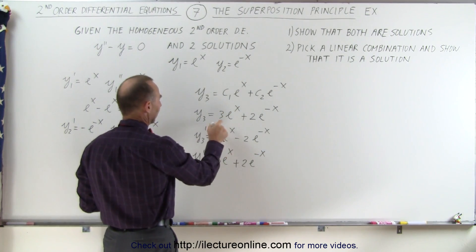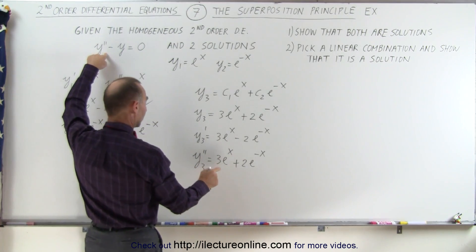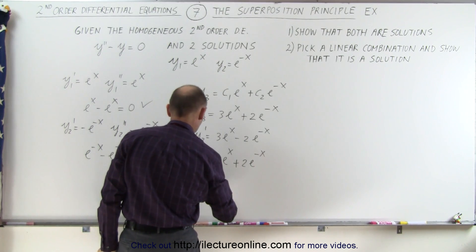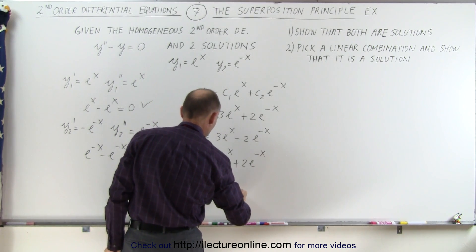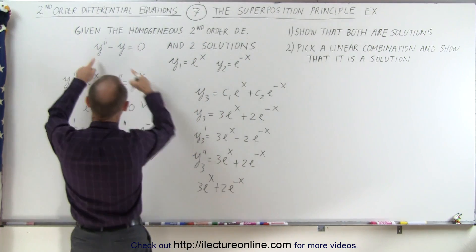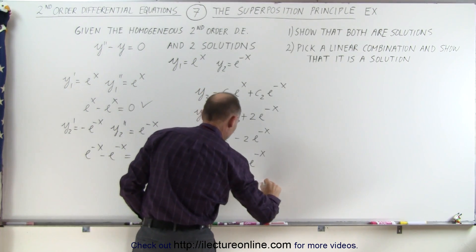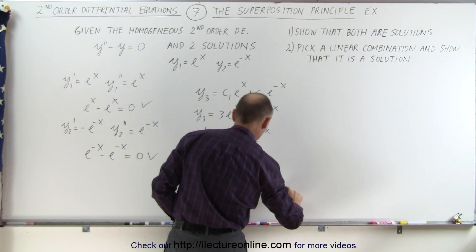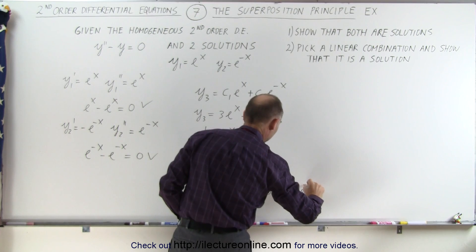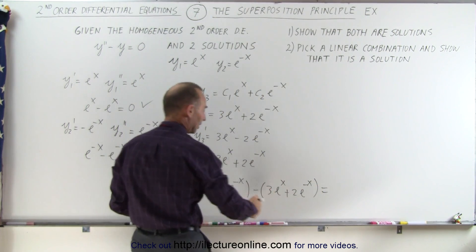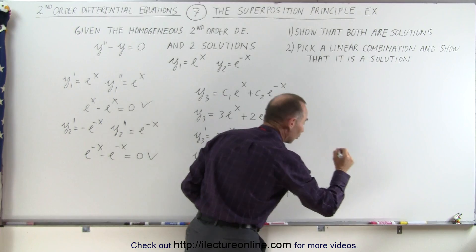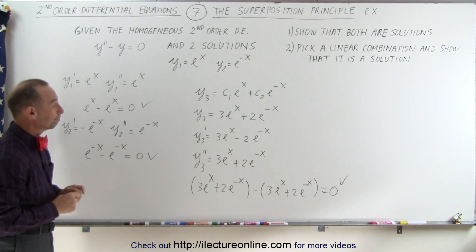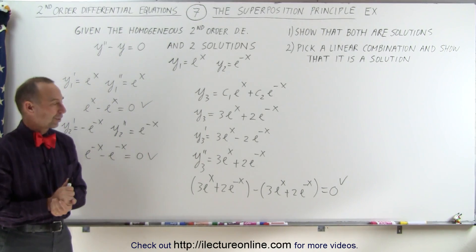Now when we plug in y3 double prime and y3, we get 3e to the x plus 2e to the minus x for the double prime, minus y which is 3e to the x plus 2e to the minus x. When we subtract, we again get zero. That shows that the linear combination is also a solution to the original differential equation — that's how the superposition principle works.